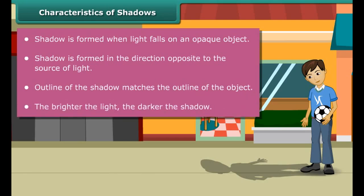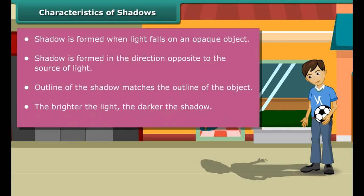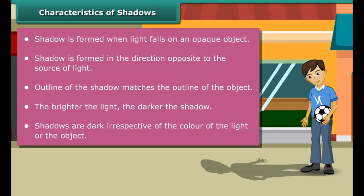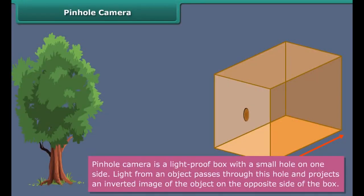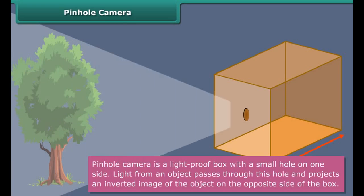In the morning, since you were facing the sun, the shadow was behind you. In the evening the sun was behind you, causing the shadow to form in front of you. When the sun set there was no light, hence there were no shadows. You have just learned some interesting facts about shadows.